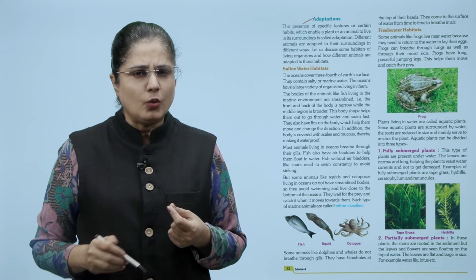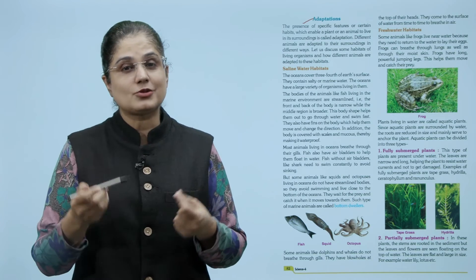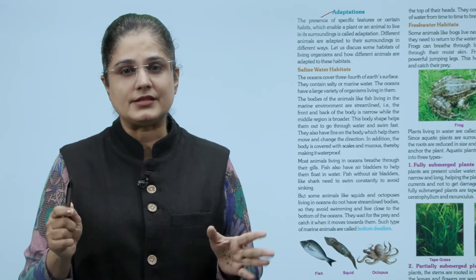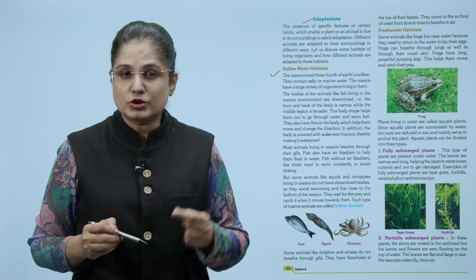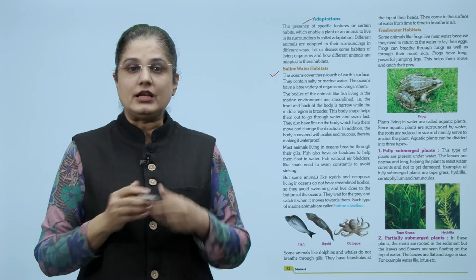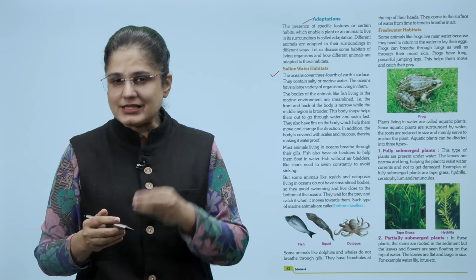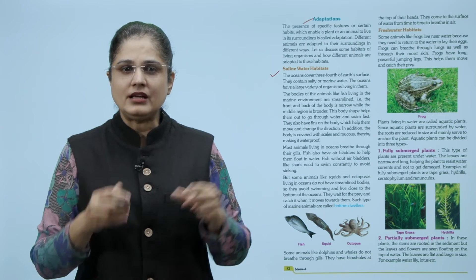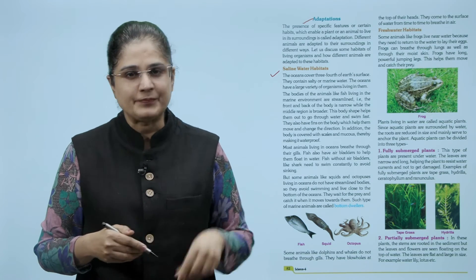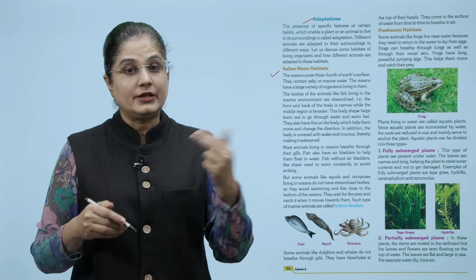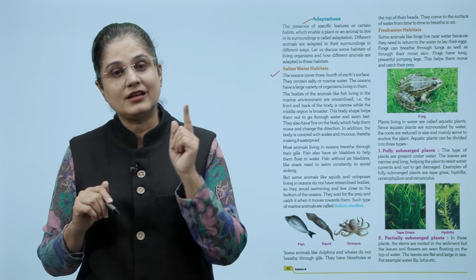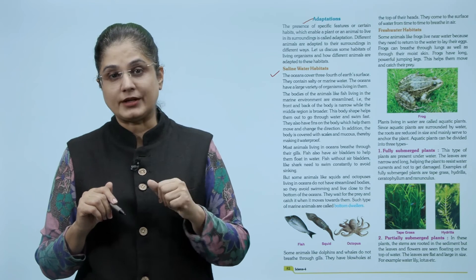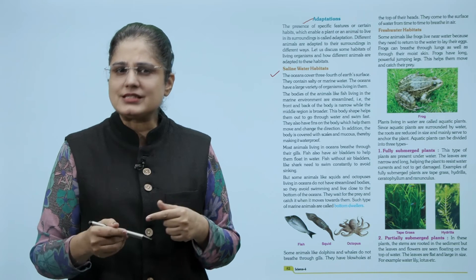Adaptation is the presence of specific features or certain habits which enable a plant or animal to live in its surroundings. Let us discuss the saline water habitats. Oceans cover three-fourths of Earth's surface and contain salty or marine water with a large variety of organisms. The bodies of fish living in the marine environment are streamlined - slightly broader in the middle - which helps them go through water and swim fast. They have fins to move and change direction, and their body is covered with scales and mucus making it waterproof. Most animals living in oceans breathe through their gills. Fish also have air bladders to help them float in water.